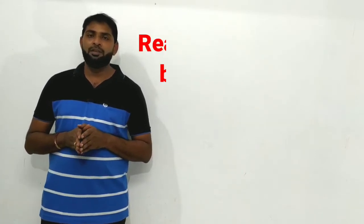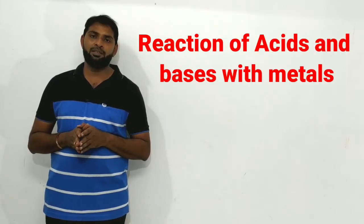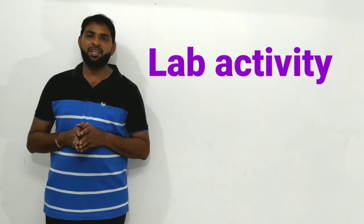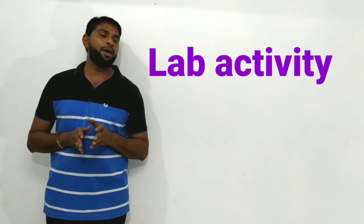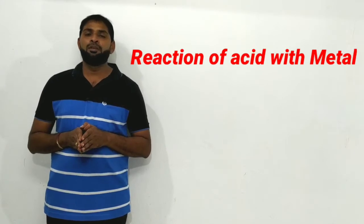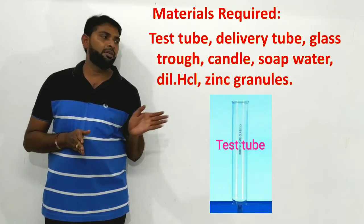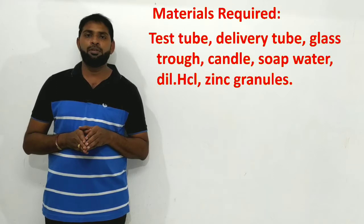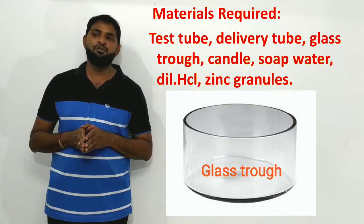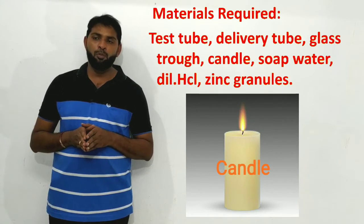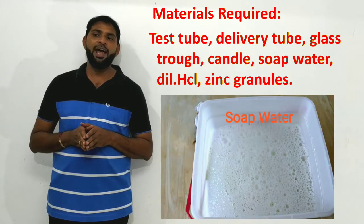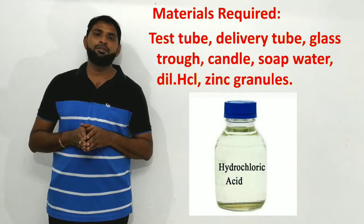Coming to the reaction of acids and bases with metals, we are going to discuss a lab activity to explain what happens when an acid reacts with a metal. Materials required: test tube, delivery tube, glass, gas trough, candle, soap water, dilute HCl, and zinc granules.